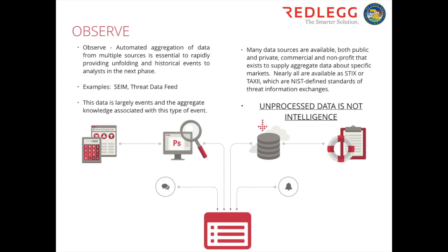Check the dates on data, especially from public and open-source feeds. For example, some government-sourced feeds send out indicators — bad IP addresses, bad domains — on a monthly basis. By the time that data reaches the individuals actually using it, half of it is already false positives and not very useful. If anything, it's adding more work to the organization trying to utilize it. Timeliness and data integrity are extremely important for your threat intelligence program.